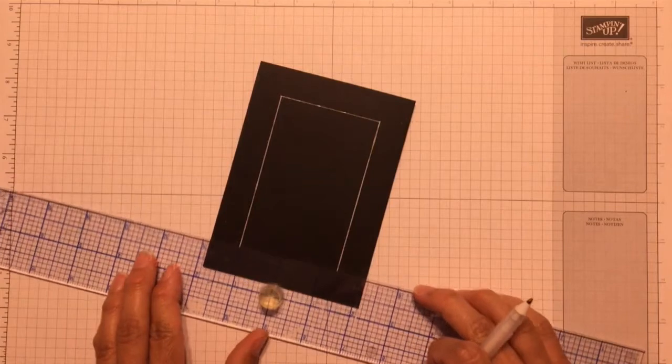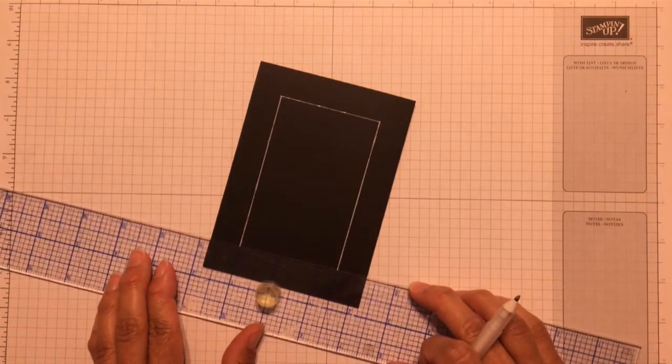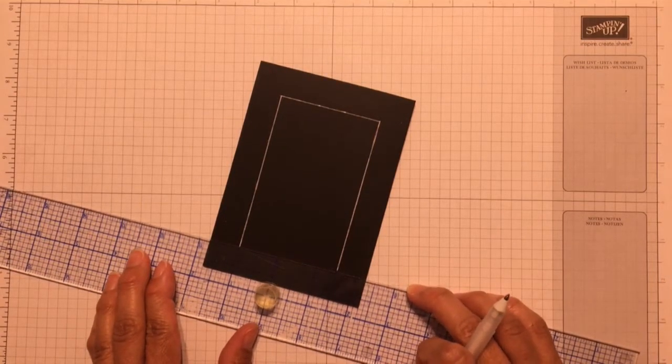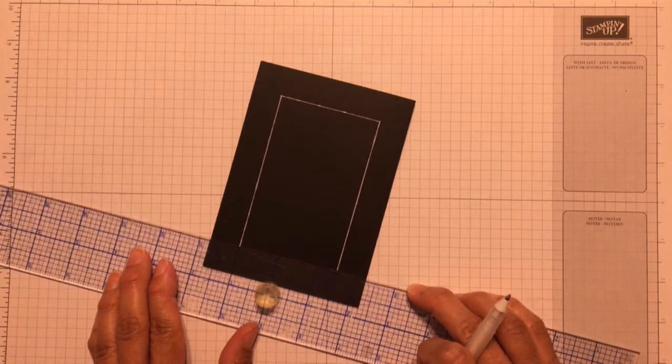But because this is black cardstock, when I put it into my paper trimmer, I really can't see the lines that go down on the clear ruler that folds over the paper to hold it in place. So I need some marks, and if I only do dots, I won't be able to see them underneath the blade.